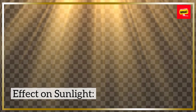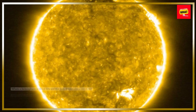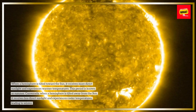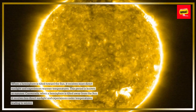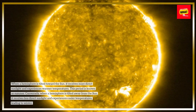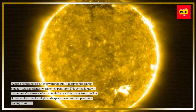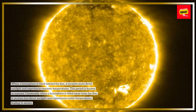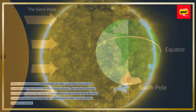Effect on Sunlight. When a hemisphere is tilted toward the Sun, it receives more direct sunlight and experiences warmer temperatures. This period is known as summer. Conversely, when a hemisphere is tilted away from the Sun, it receives less direct sunlight and experiences cooler temperatures, leading to winter.